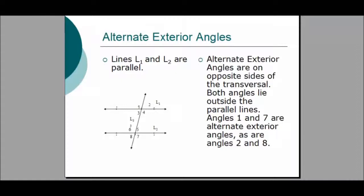Alternate exterior angles are congruent, assuming the lines are parallel and are cut by a transversal. Alternate exterior angles are on opposite sides of the transversal, and both angles lie outside the parallel lines. Angle 1 and Angle 7 are alternate exterior angles and they are congruent. Angle 2 and Angle 8 are also alternate exterior angles and they are congruent as well.